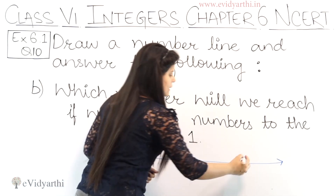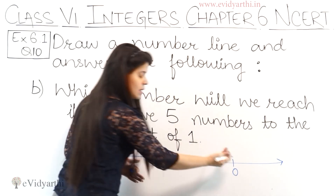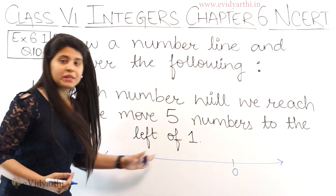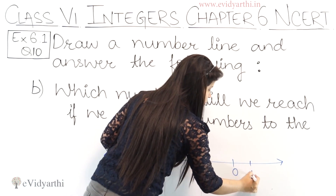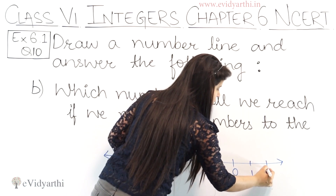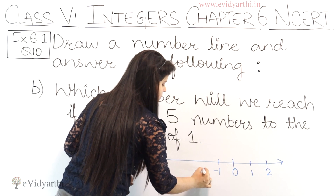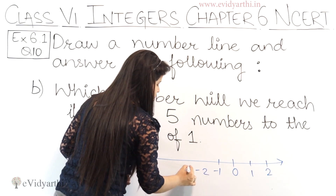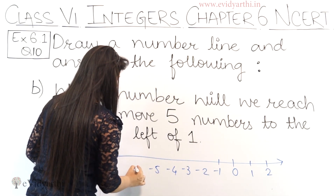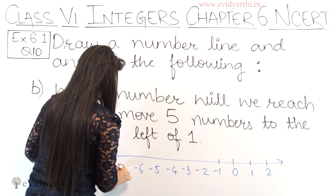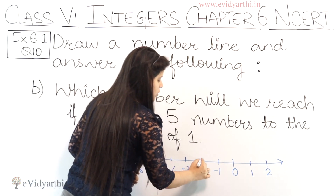This is the number line. Let's take 0 here — because we have to move left side, we need more numbers on the left side. This will be 1, 2. Then this side: minus 1, minus 2, minus 3, minus 4, minus 5, minus 6, minus 7, and so on.